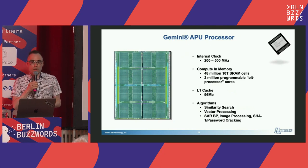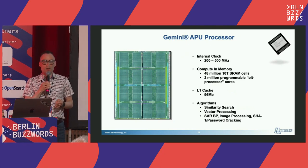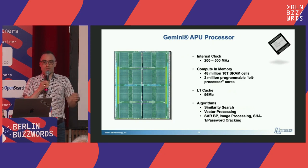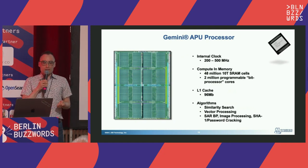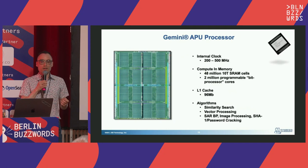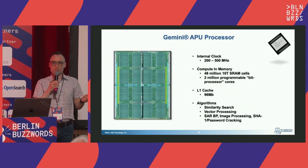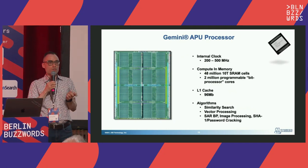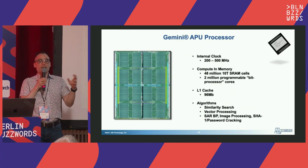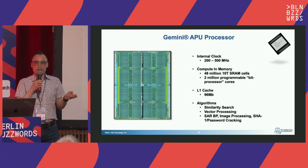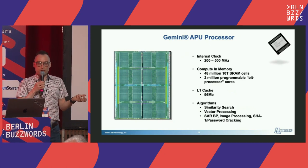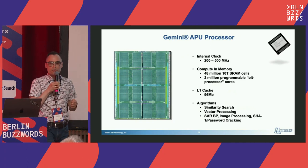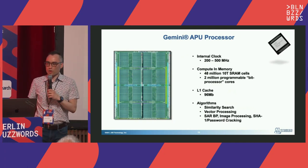So what's APU? APU stands for Associative Processing Unit — think of it as the family of cards like GPU, TPU, and so on. It's a compute-in-memory architecture with 48 million memory cells and 2 million programmable bit processor cores. It can do bit logic really fast, all in memory. It supports algorithms like similarity search, vector search, and image processing.